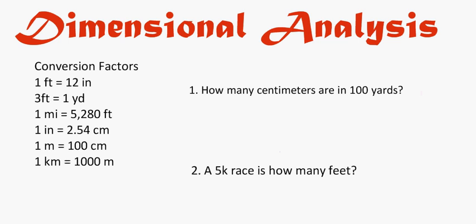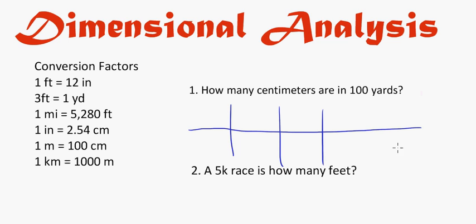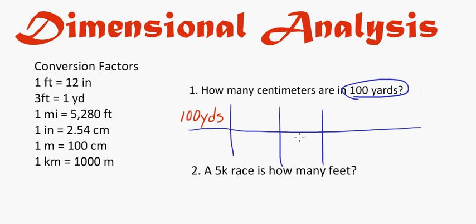One way you can do it is using a graphic organizer to help you organize your information. You're going to make a chart — a grid — like this. You can look at the problem and see what you're given. In this case, I'm given 100 yards, and it says how many centimeters are in 100 yards. So you want to start with 100 yards and put it in the upper left-hand corner, and I'm going to try to convert that to centimeters.